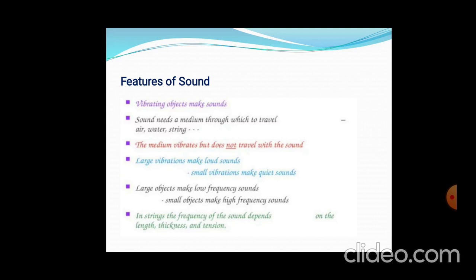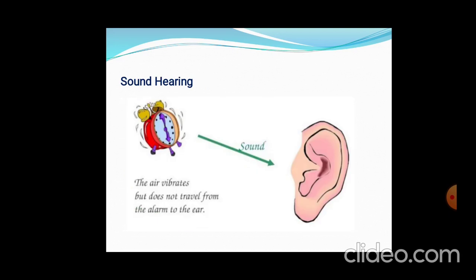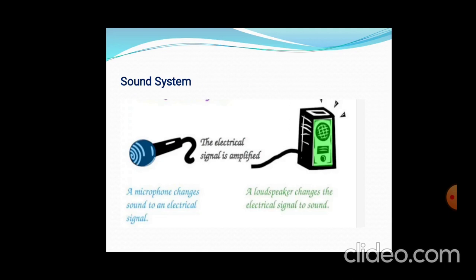The sound system contains microphones and loudspeakers. The microphone changes sound to an electrical signal, while the loudspeaker changes the electrical signal back to sound. This is the basic difference between the two components.